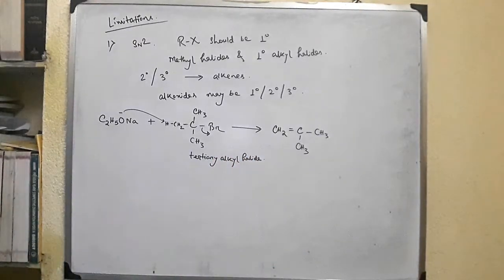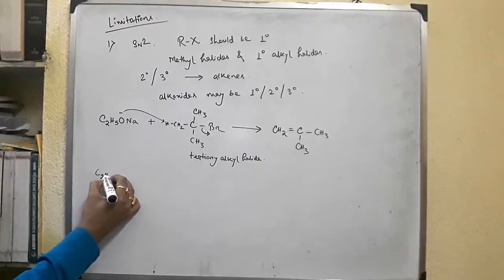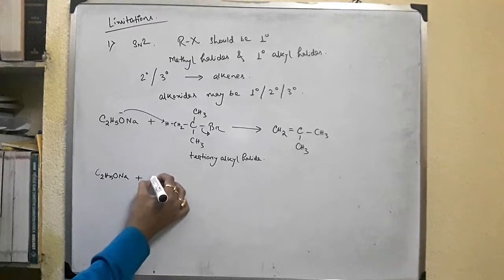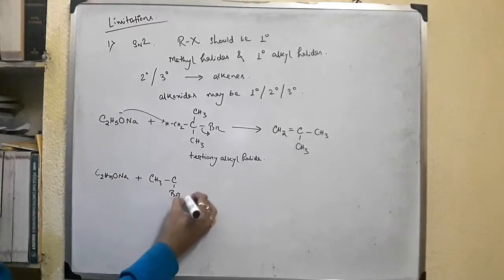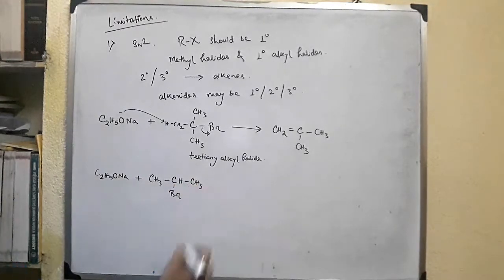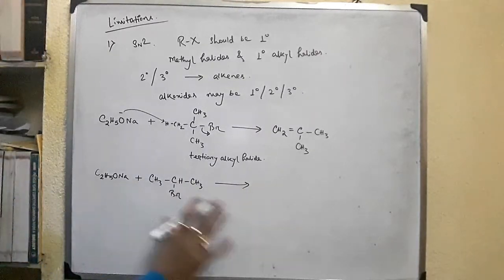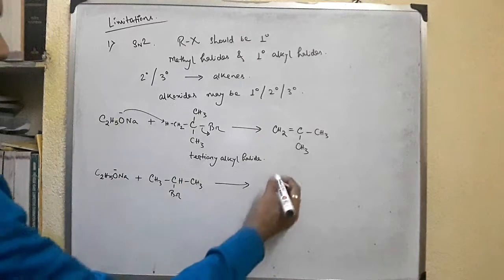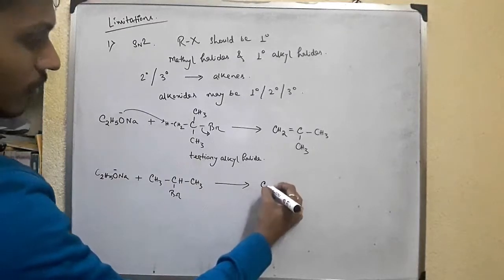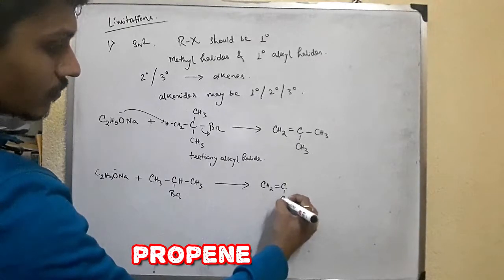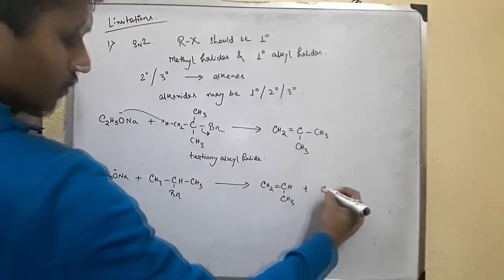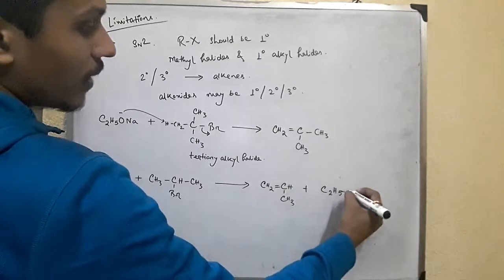In the case of secondary halides, there is a mixture of ether and alkene. For example, sodium ethoxide plus a secondary alkyl halide such as 2-bromopropane: the base attacks the hydrogen and the bromide is forced to leave, giving an alkene as the major product plus a small amount of ether as the minor product.